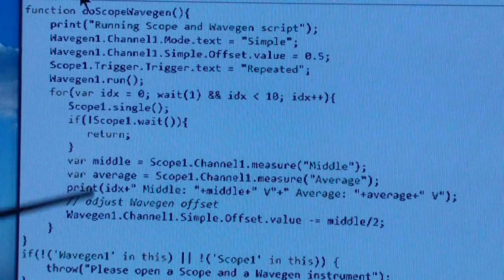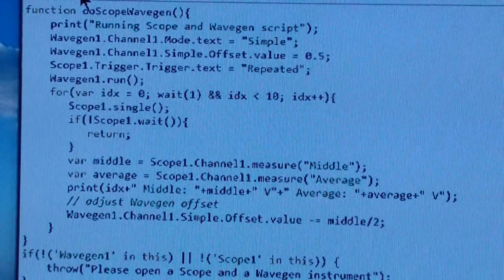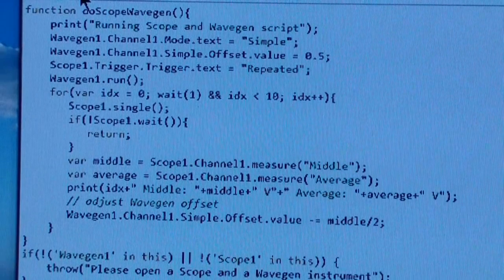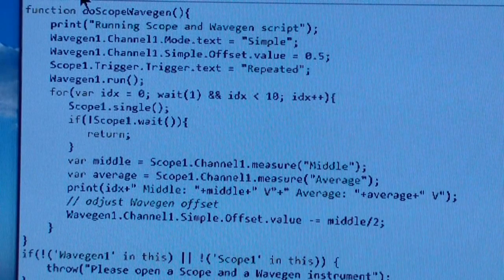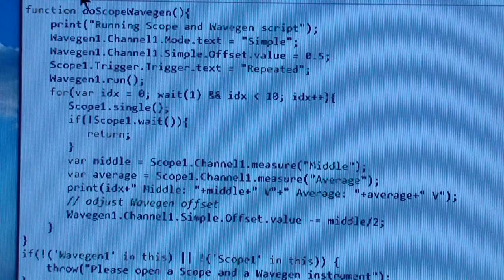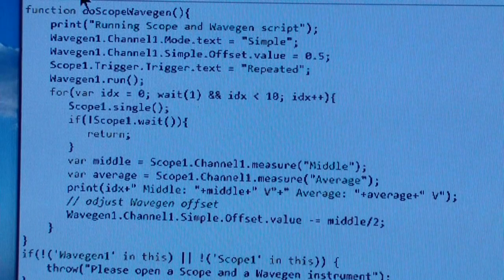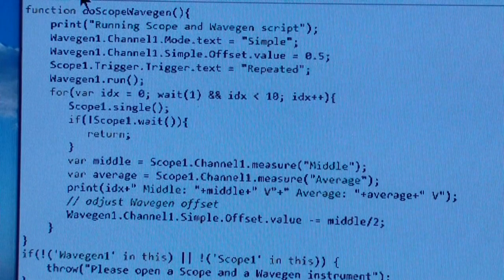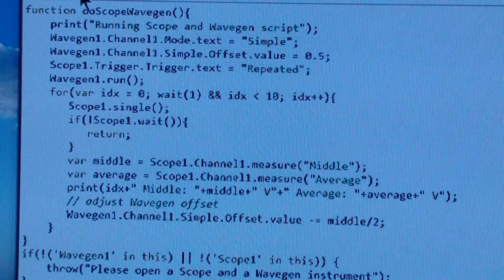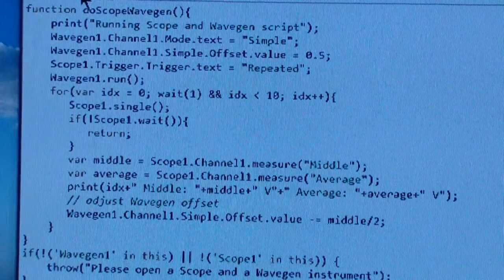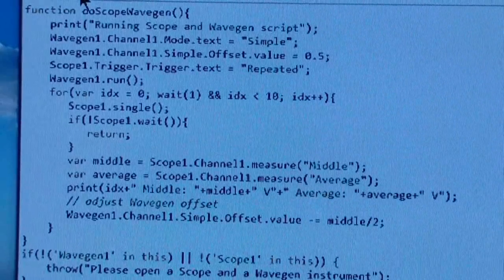Then you adjust the wavegen offset and go through the for loop again. Once again, if you're familiar with JavaScript or any of the C languages, you'll recognize this as typical programming in those languages.